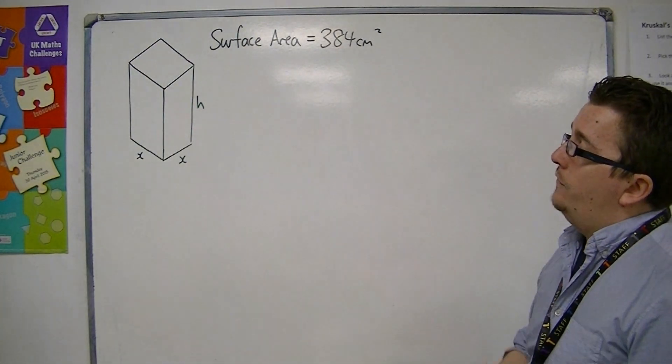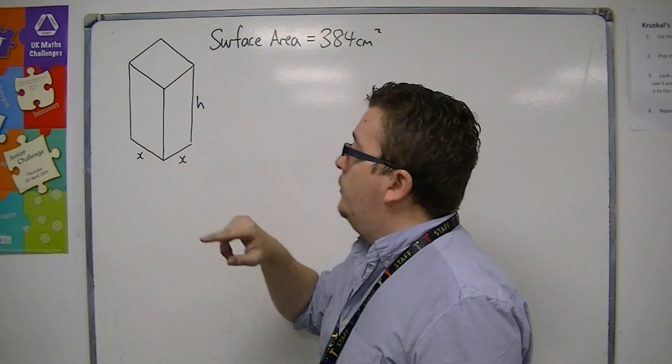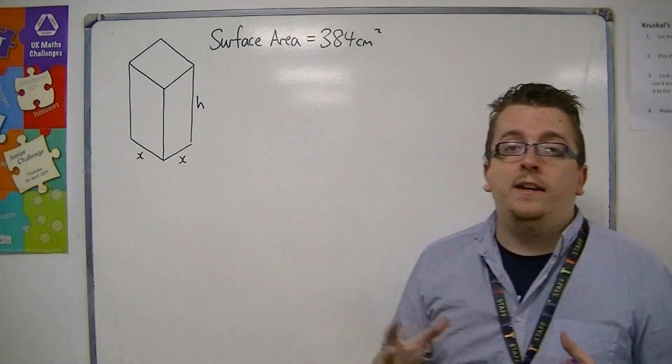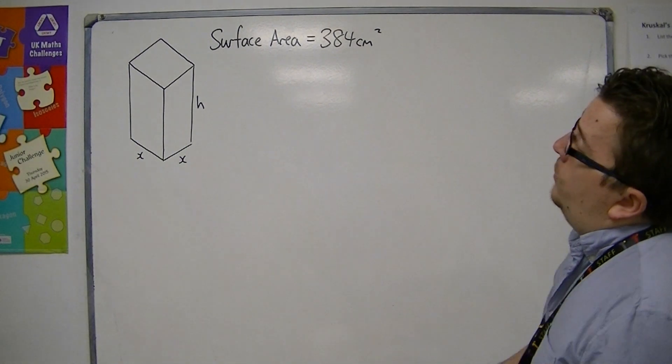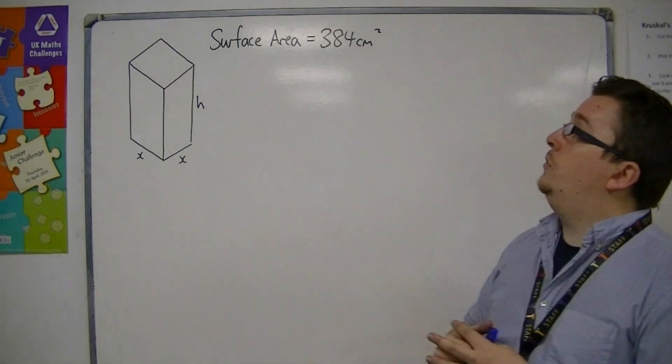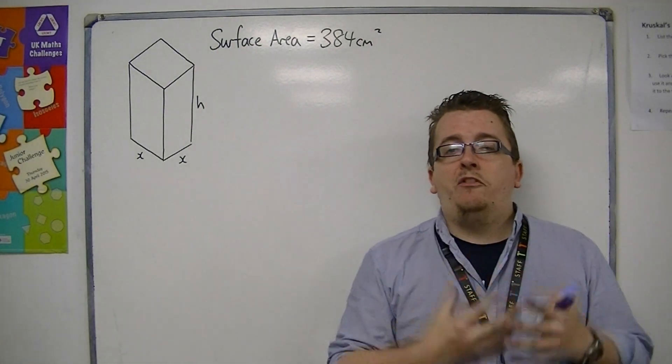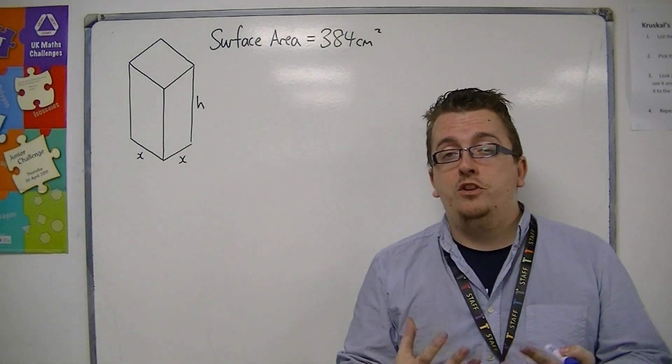So let's say we have this rectangular box. We've got a base of x by x and a height h. And then we've got a surface area of 384 square centimeters. What is the maximum volume of the box?